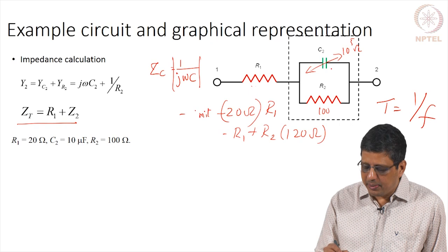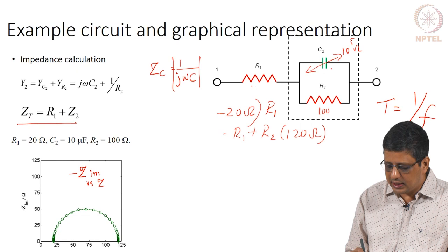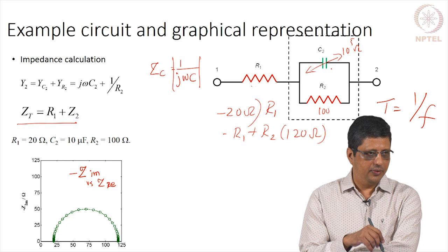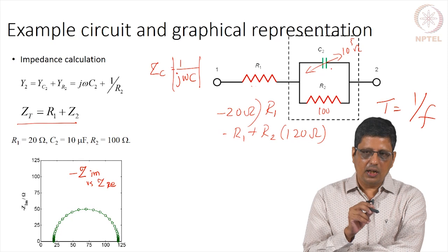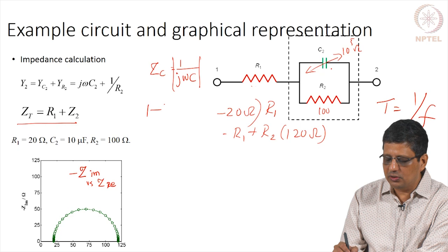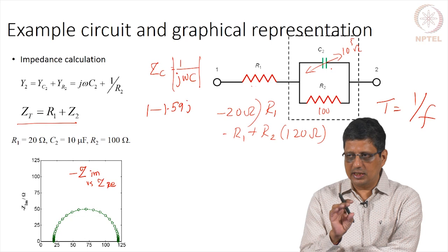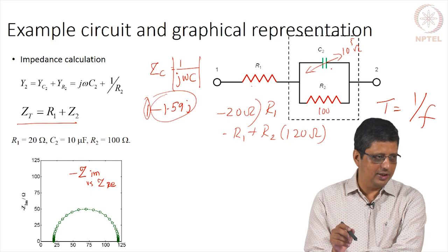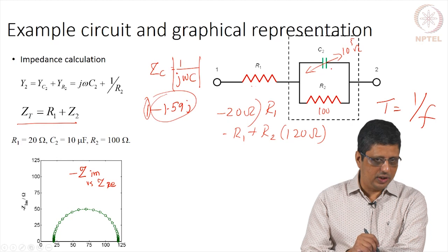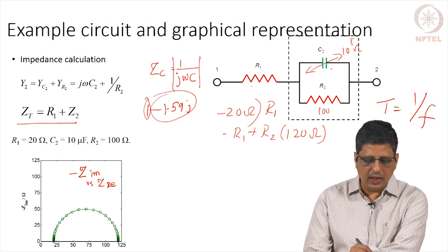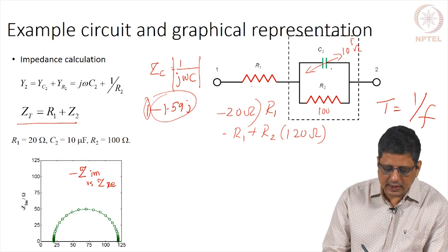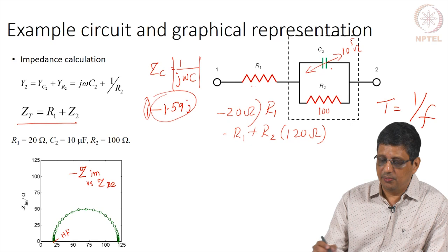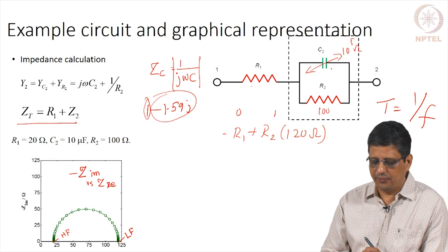One way of plotting the impedance is to plot minus Z_imaginary versus Z_real. The abscissa is Z_real and the ordinate is minus Z_imaginary — not Z_imaginary. As we saw in the previous calculation, we got a value like 1 − 1.59j. That means the real value is positive and the imaginary value is negative. Most of the time, especially at high and mid frequencies, we get data with a positive real part and negative imaginary part. So it is plotted as minus Z_imaginary versus Z_real. The high frequency data comes to 20 ohms and the low frequency data comes to about 120 ohms, with mid frequencies in between.